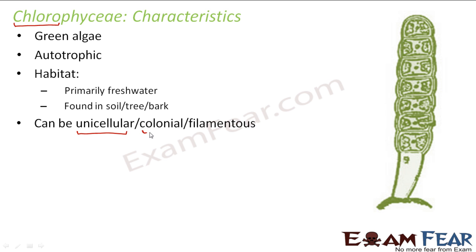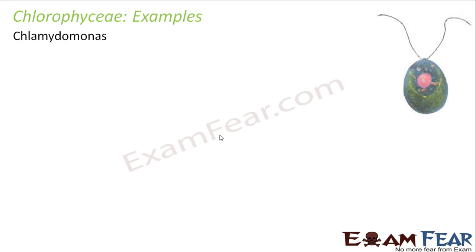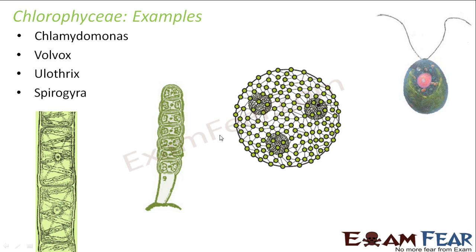Chlorophyceae can be unicellular, colonial, or filamentous. An example of a unicellular Chlorophyceae is Chlamydomonas. A colonial Chlorophyceae would be Volvox. A filamentous Chlorophyceae can be Spirogyra — so it can be one cell, in the form of colonies, or in the form of filaments.